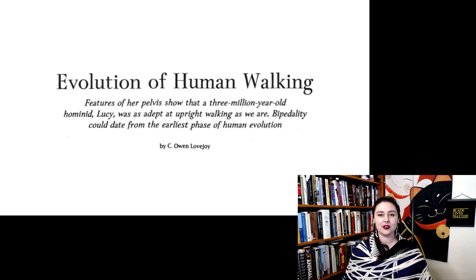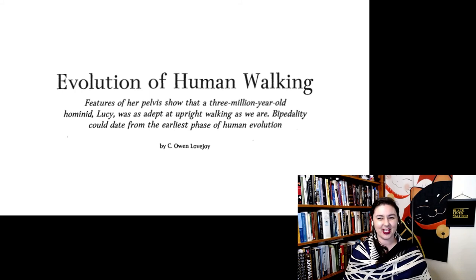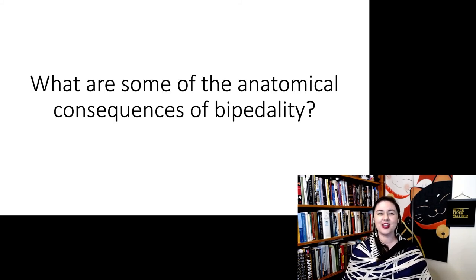I highly recommend you check out this paper by Owen Lovejoy. He does a great job of talking about the evolution of human walking and some of the most important anatomical modifications that made it happen. So can you explain what are some of the anatomical consequences of bipedality?